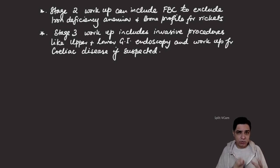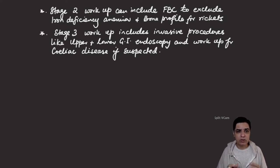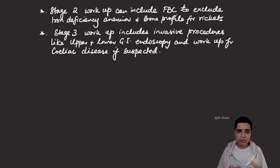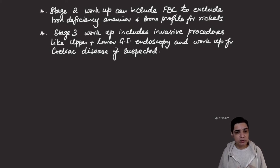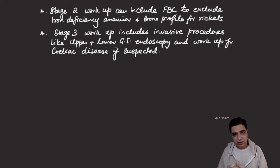If stage one tests are inconclusive, stage two tests include a full blood count, iron studies, a blood smear to exclude iron deficiency anemia, and a bone profile to identify associated rickets. Stage three involves invasive investigations such as lower GI endoscopy — sigmoidoscopy or colonoscopy — or upper GI endoscopy combined with a celiac screen if celiac disease is suspected.